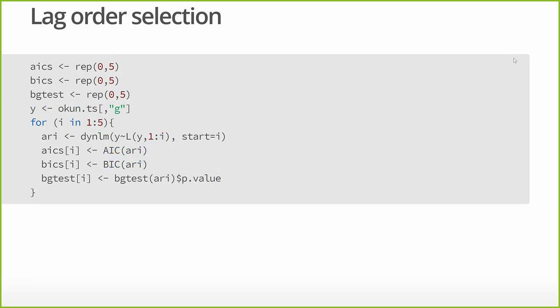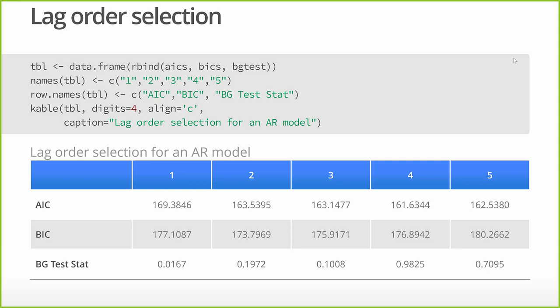The first two, we're using information criteria. The second one is, we just want to test, is there any serial correlation in the error terms? So now what we're going to do is we're going to put all that data together into a table. And then I'm just going to name the columns of the table 1, 2, 3, 4, 5 to go along with the lags. And then I'm going to name the rows AIC, BIC, and BG test stat so that I know what I'm looking at. And then I'm just going to spit out the table.